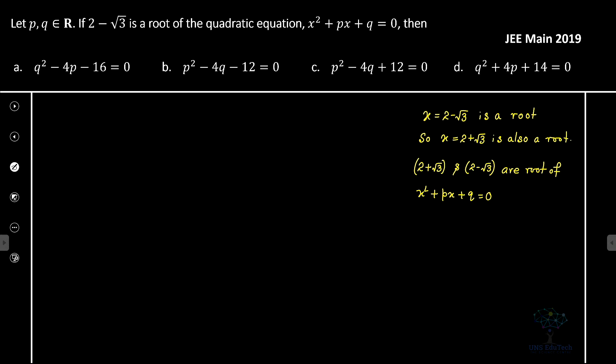So therefore we'll find what is the sum of roots. Sum of roots definitely equals minus p and that equals we are adding them, so that gives you 4.